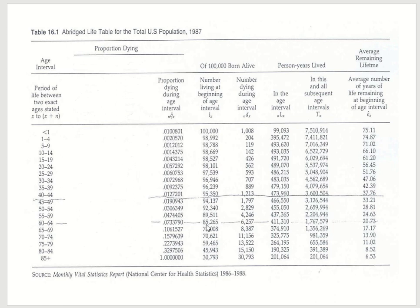For example, for the interval 60 to 64 — a 5-year interval — you have 85,265 entering the interval and 6,257 died. You get 6,257 by multiplying the age-specific death rate by the total number entering the interval. To calculate years lived: for the 79,008 who exited, you give each 5 years; for the 6,257 who died, you give each half the interval — 2.5 years. Adding these two numbers gives 411,310 years lived in that interval.